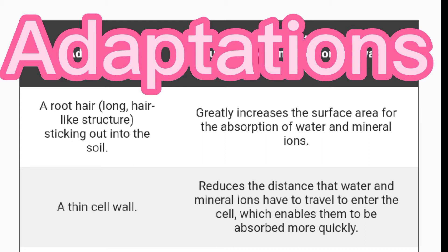Let's study how root hair cells are adapted to perform their function. Root hair cells have a long hair-like structure — it looks like a hair, that's why it's called a root hair cell. This provides maximum surface area for the absorption of water and minerals. Root hair cells are long and thin so that they can penetrate between soil particles.